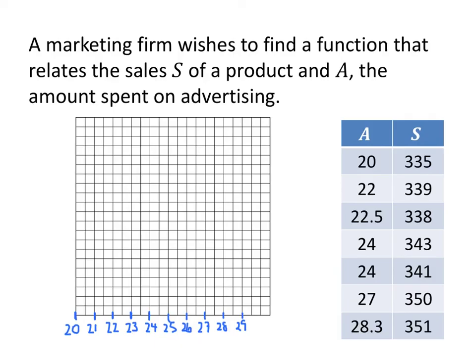Now let's look at the y-axis. Our S values go from 335 up to about 351, so let's start the y-axis at around 330. Again, there's no reason to start at zero. Looking at the available boxes, we can do this one-for-one, where one box equals one unit of the sales variable. I'll label by fives to avoid labeling every box: 335, 340, 345, and 350.